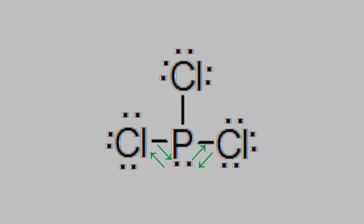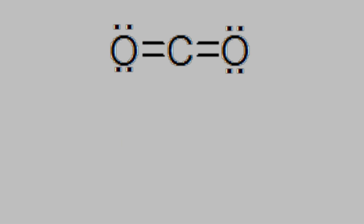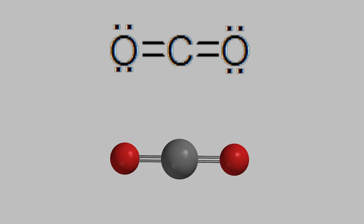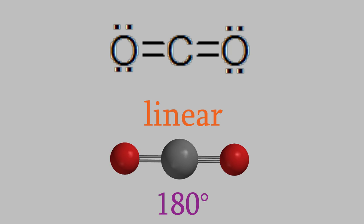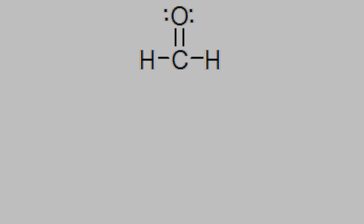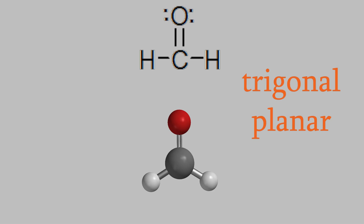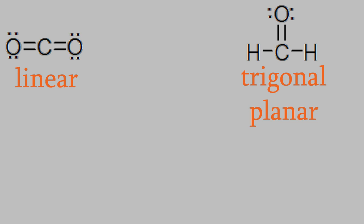For example, last time we saw that carbon dioxide has two bonds, and these get as far apart as possible, so they make a 180 degree angle, and we call that a linear shape. Meanwhile, formaldehyde has three bonds, which makes a trigonal planar shape, with an angle of 120 degrees between the bonds. But notice that in both of these cases, the central atom didn't have any electron pairs on it.